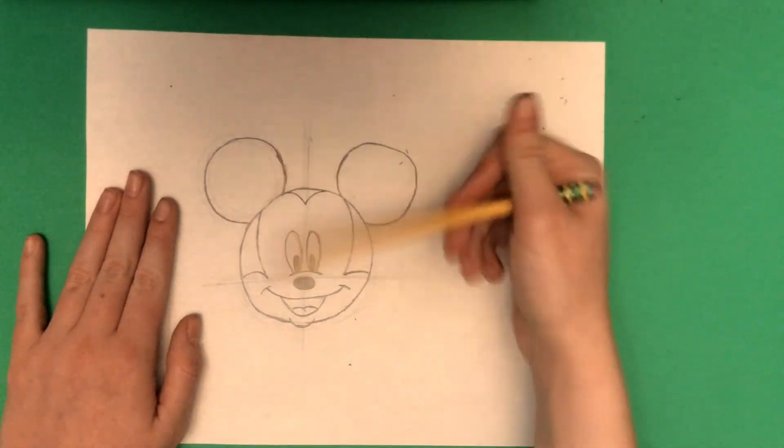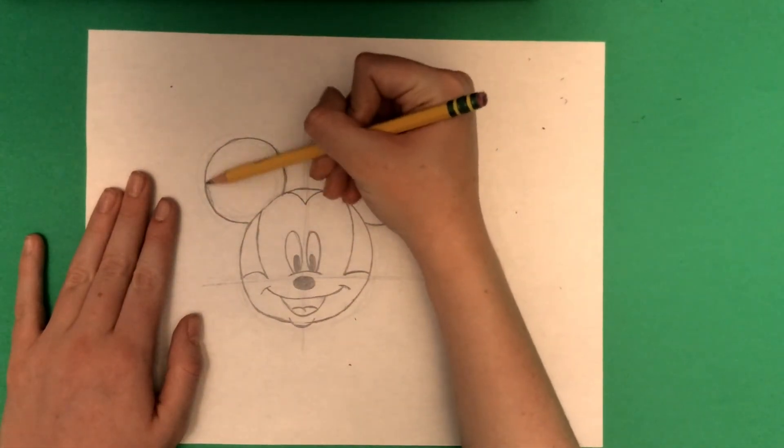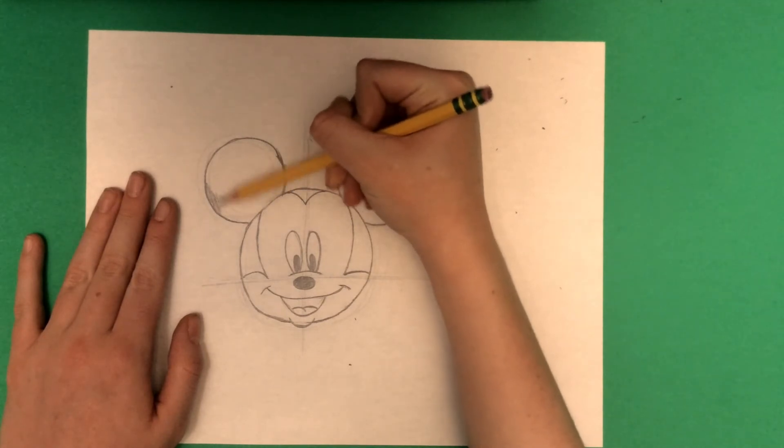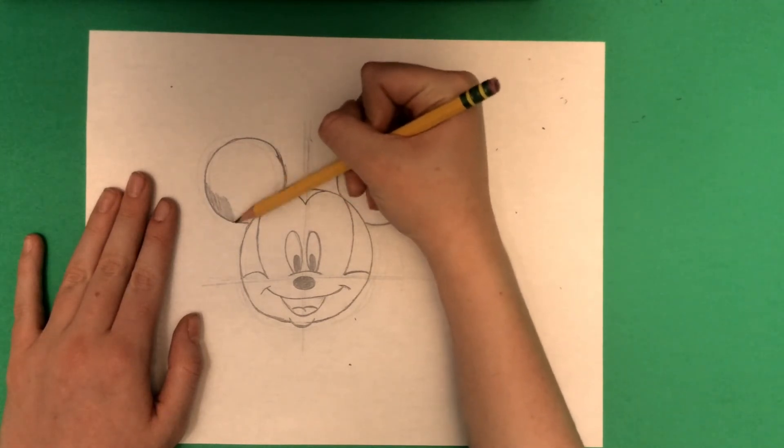It's shading time, so you're going to want to shade the ears and his little side things and the V on his forehead. Don't forget the inside of the mouth.